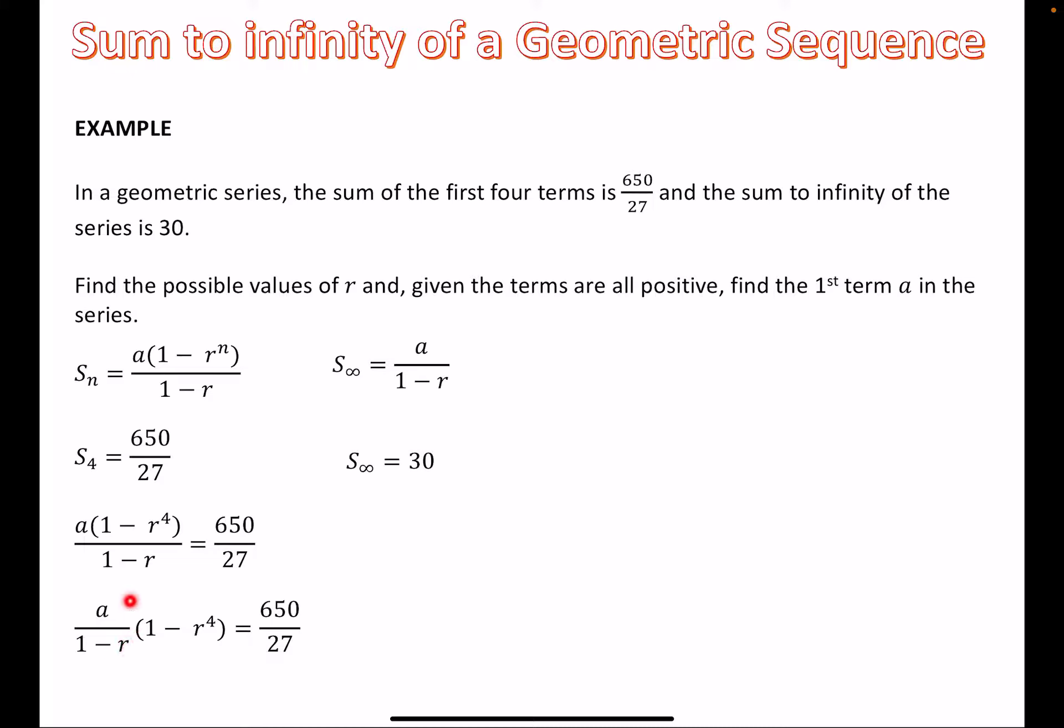In which case, we can kind of substitute this in to the first aspect. This bit here is the same as this bit here, and we know that that is 30. So we can substitute that in, in which case, we can say that 30 times by 1 minus r to the power of 4 is equal to 650 over 27. Now, this is combining all the stuff that we know from the question. It's eliminating kind of enough variables that we can actually now solve this. So we can divide both sides by 30. We can add 1 and take away, basically resolve it so it's r to the power of 4, in which case we can find the fourth root of 1 minus 65 over 81, which is plus or minus two-thirds.